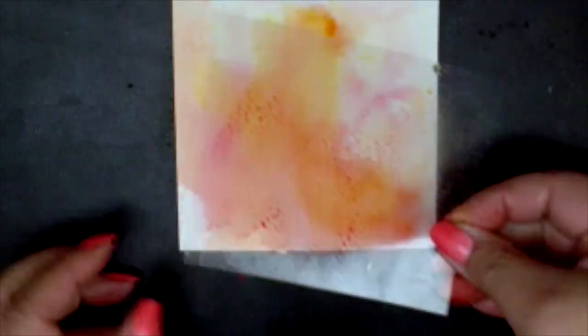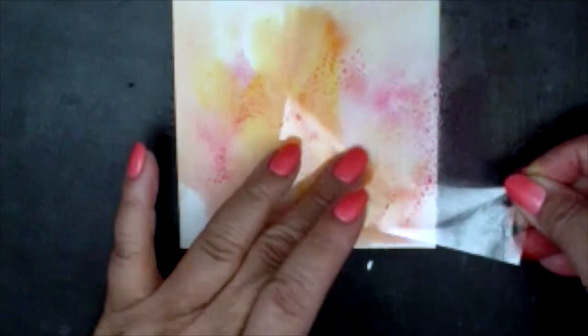I'm going to dry this paper off a little bit just to see what the color really looks like. I think I want a little bit more pink. So I'm going to add it to the acetate, spritz a little bit, and apply it where I think I want more pink.